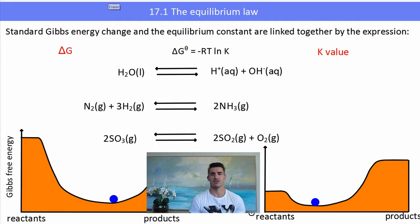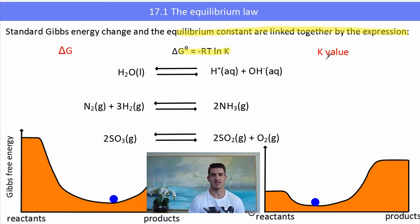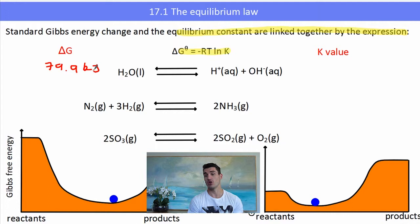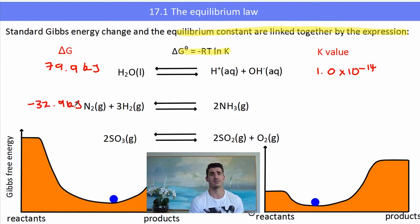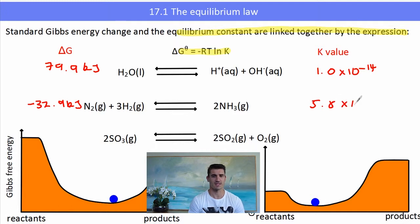The relationship between delta G and K is given by the expression: delta G = -RT ln K, where R is the gas constant, T is the temperature in Kelvin, and K is the equilibrium constant. For example, the ionization of water has a delta G of +79.9 kJ — a positive delta G, meaning a non-spontaneous or uphill reaction, so we expect a very small K value. For the formation of ammonia via the Haber process, delta G is -32.9 kJ, a downhill reaction, giving K = 5.8 × 10⁵.